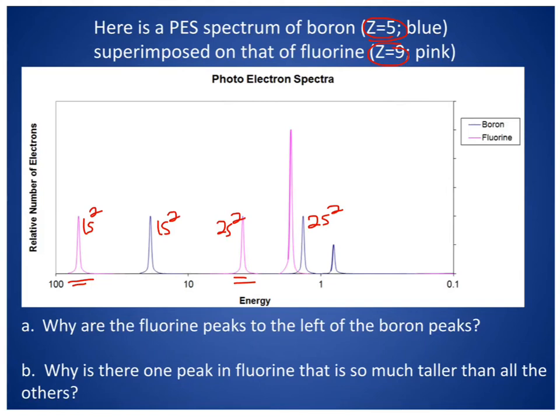For B, why is there one peak in fluorine that is so much taller than all of the others? Because these would represent my 2p5 electrons, and these would be 2p1 of boron, because I have more electrons in that particular subshell. So remember, the height or the intensity of the signal is relating to the number of electrons. Just be aware of your axis again, because if this axis were reversed, if instead of going from high to low, it went from low to high, then rather than being to the left, the fluorine peaks would be to the right.